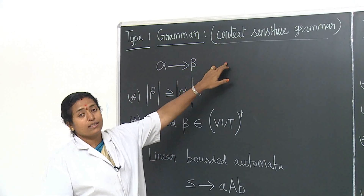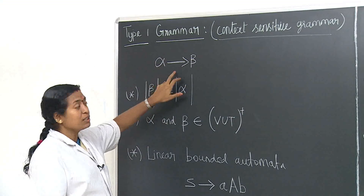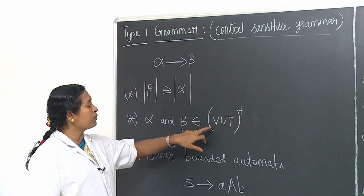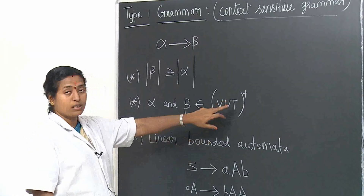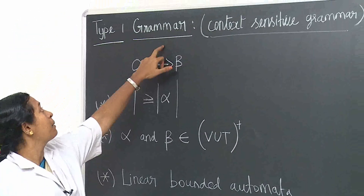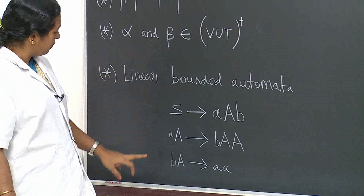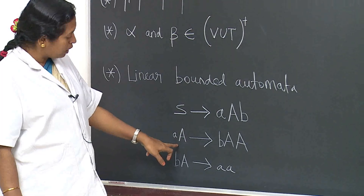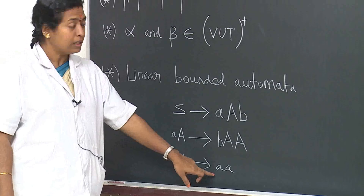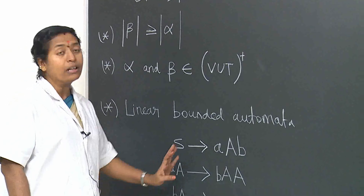Type 1 grammar is otherwise known as context sensitive grammar, similar to type 0. The derivation is alpha derives beta, where the length of beta should be greater than or equal to alpha, and alpha and beta are subsets of V union T positive closure. The automaton for this type of grammar is the linear bounded automaton, and the language generated is type 1 or context sensitive language. No epsilon is allowed on either the left or right side of the productions.